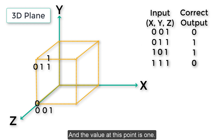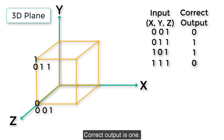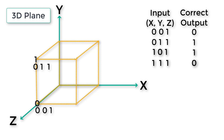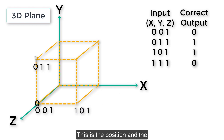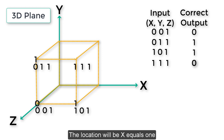The value at this point is 1. In the third dataset, input is 1, 0, 1 and the correct output is 1, meaning x equals 1, y equals 0, and z equals 1 - this is the position and the value here is 1. The fourth dataset is 1, 1, 1 with correct output 0, so the location will be x equals 1, y equals 1, z equals 1, and the value at this location is 0.